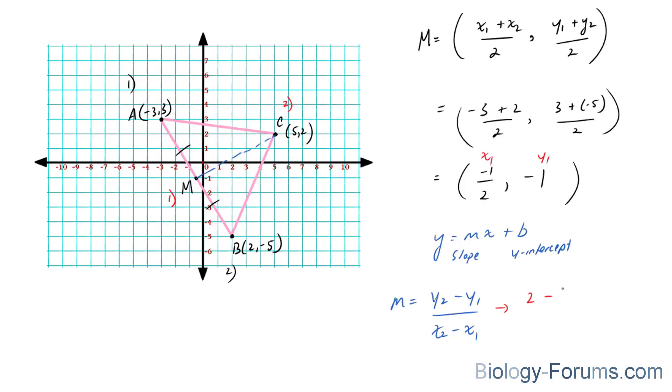So let's fill that in. 2 minus negative 1, and x2, 5, minus x1, which is negative half, gives us the answer...